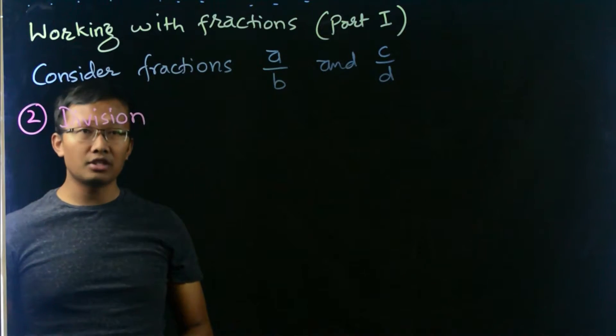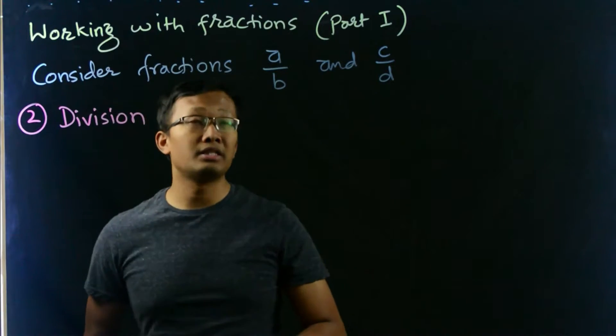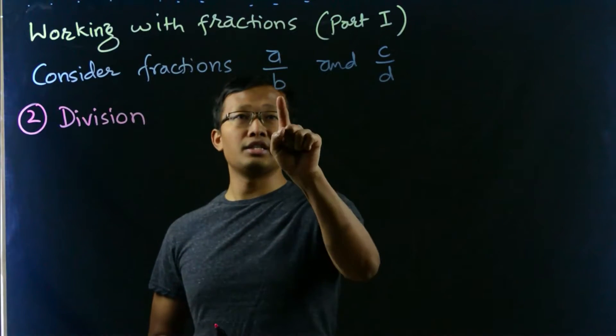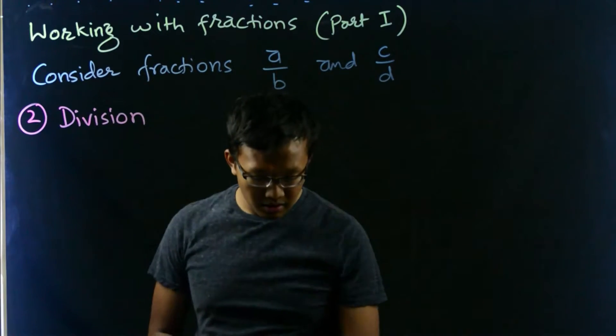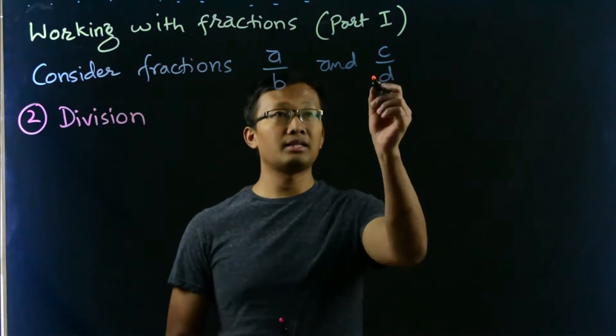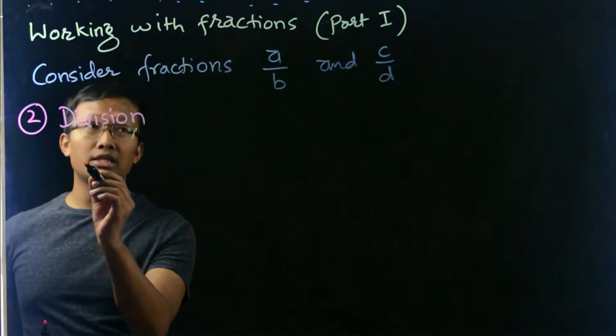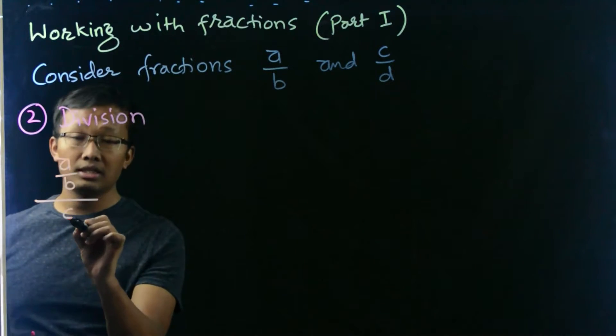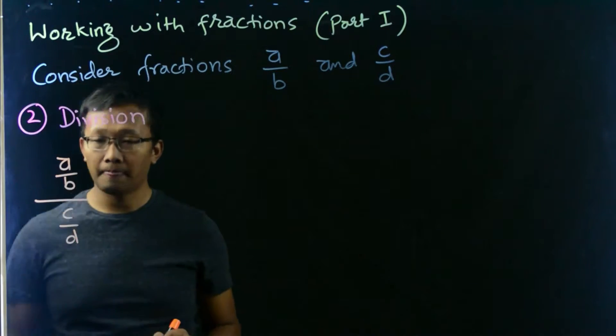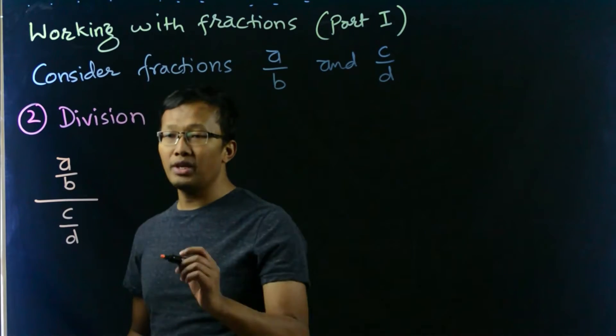Suppose we want to divide this fraction by this one, that is a by b divided by c by d. Well, we can write it this way: a divided by b, whole divided by c divided by d. If you see this kind of fraction, then we can write in this way: put the fraction on the numerator as it is.